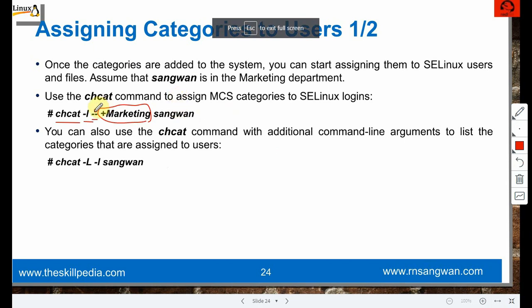Once the category is properly defined, we can use the command: 'chcat -l -- +marketing sang1'. To list categories assigned to a user: 'chcat -L -l sang1'. By default the user is at s0 only with no additional categories assigned.